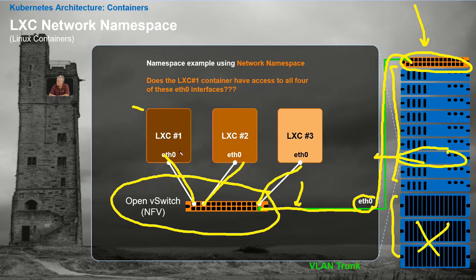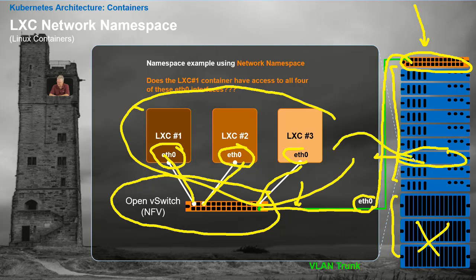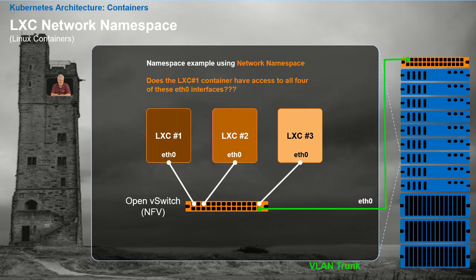Take a look at each one of these network namespaces and you'll see that each one has an ethernet zero interface. All three of these are just software running on that compute node, which also has a physical ethernet zero. So which ethernet zero wins? They all do. If you're in LXC number one, the only thing you would see would be your ethernet zero — that's the point of a network namespace.